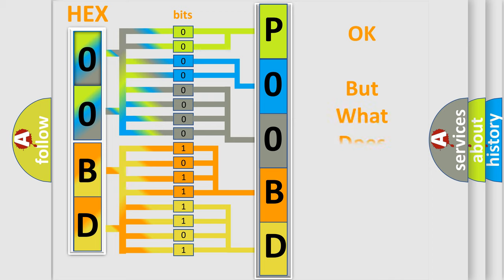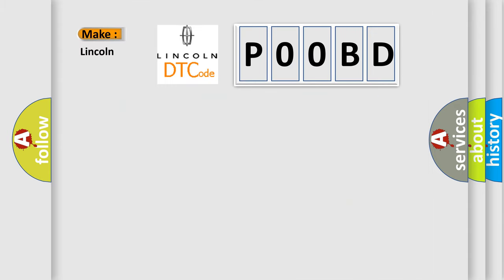The number itself does not make sense to us if we cannot assign information about what it actually expresses. So, what does the Diagnostic Trouble Code P00BD interpret specifically?